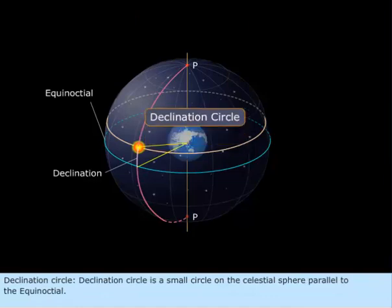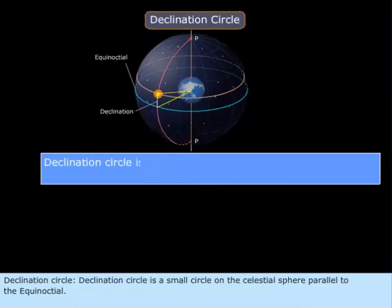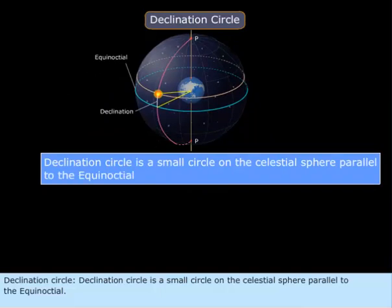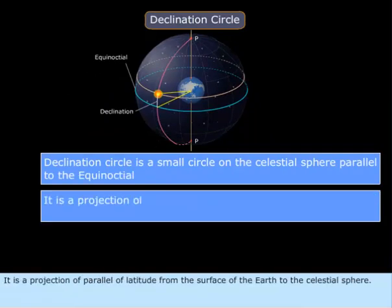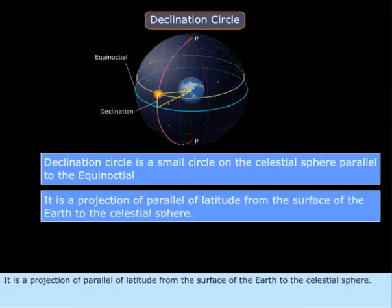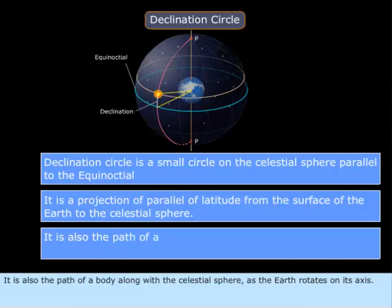Declination Circle. A declination circle is a small circle on the celestial sphere parallel to the equinoctial. It is a projection of a parallel of latitude from the surface of the Earth to the celestial sphere. It is also the path of a body along the celestial sphere as the Earth rotates on its axis.